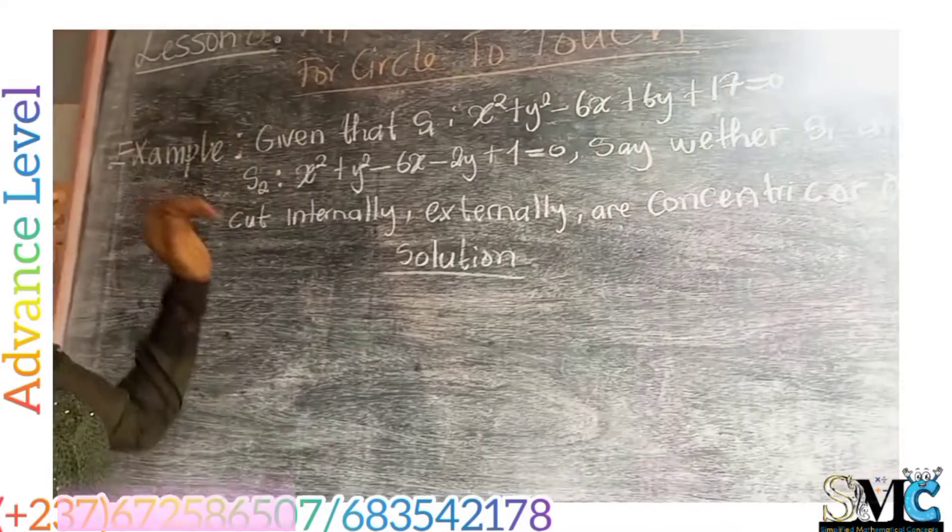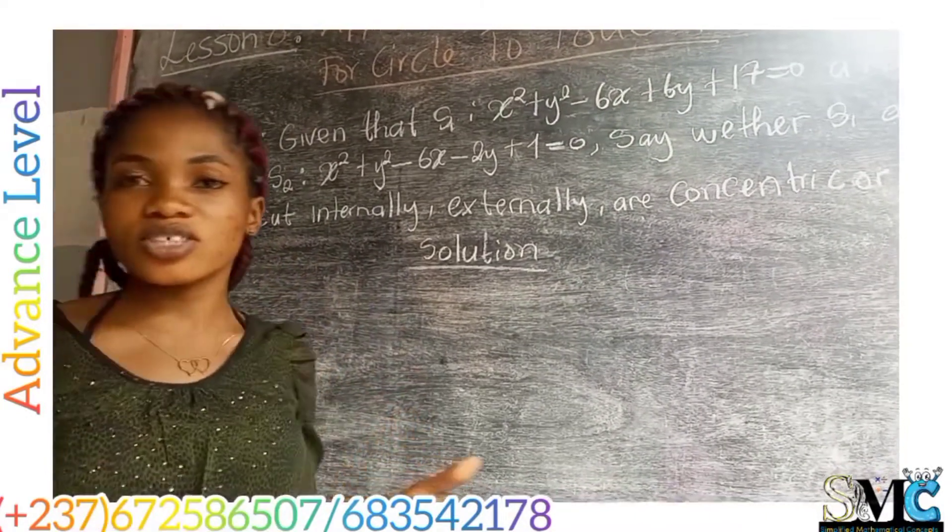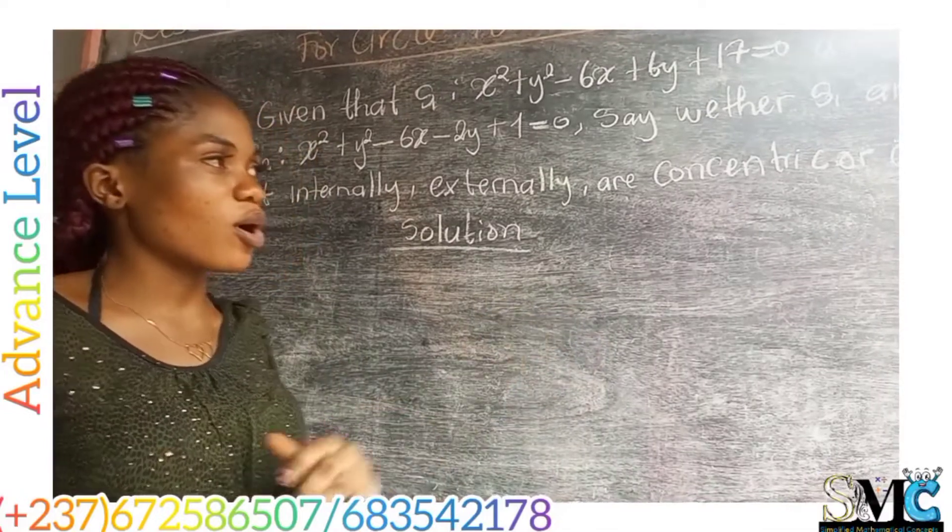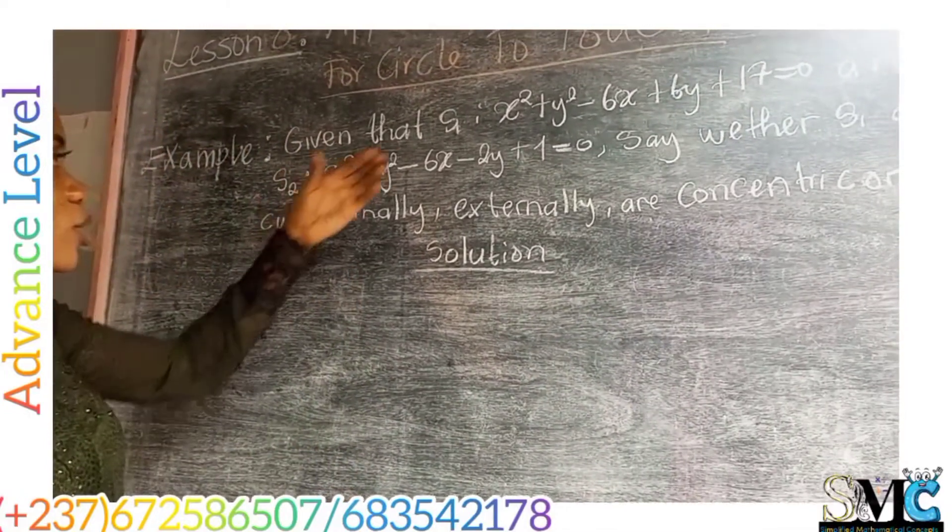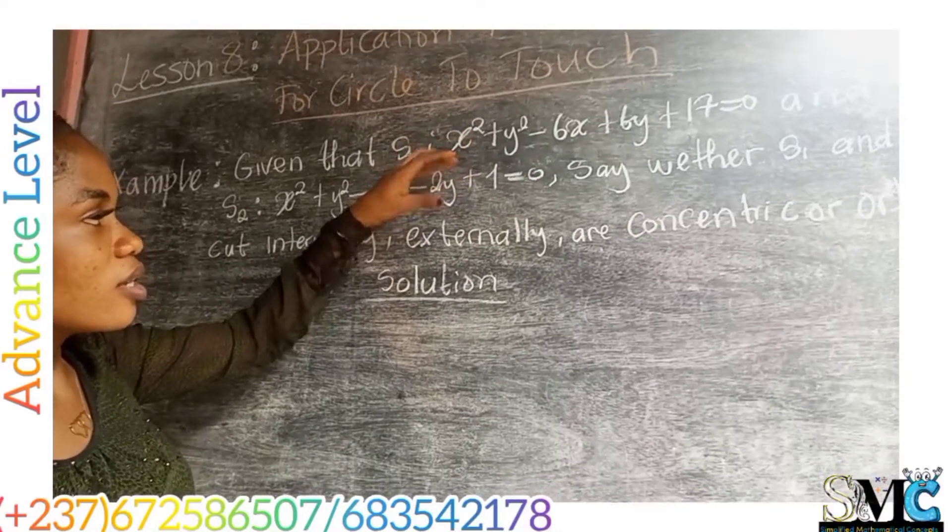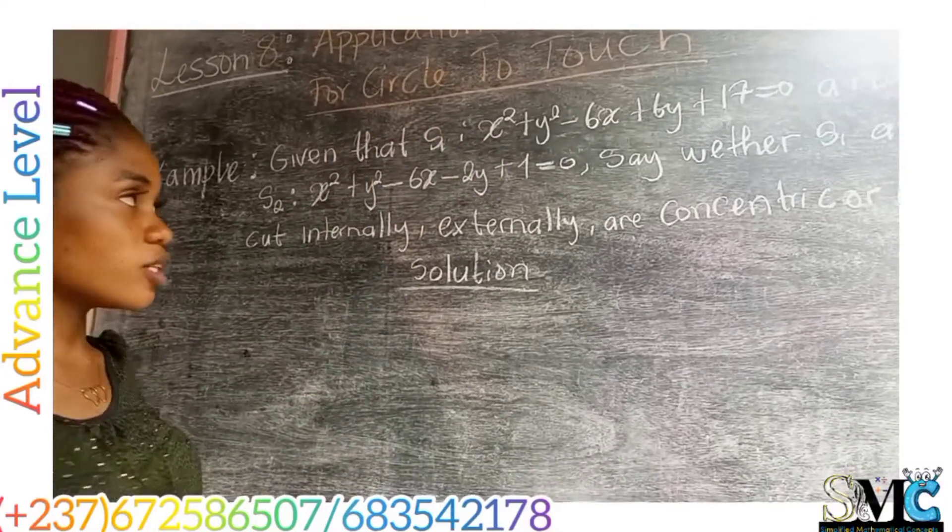In the previous lesson, we saw the various conditions for two circles to touch internally, externally, being concentric or orthogonal. So to do this, we are first going to bring out the center and the radius of these two circles.